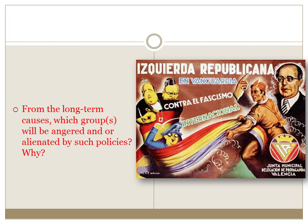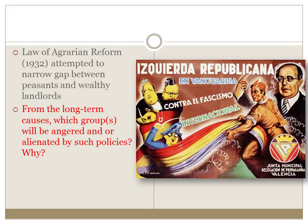They also passed a law of agrarian reform in 1932 which essentially redistributed land, providing the peasants with land they could own and use to feed themselves, rather than being tenant farmers of wealthy landlords. Given the long-term causes we've discussed, consider which groups would be angered or alienated by such policies and why.